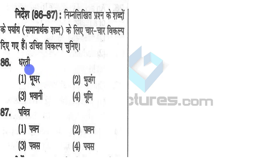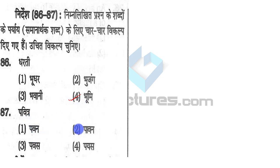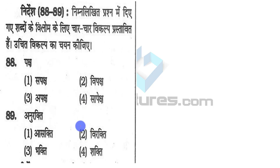Now they are asking for synonyms — you just have to tell the synonym of the given word. 'Dharti' means earth, and the synonym for dharti is 'bhoomi,' which also means earth. 'Pavitra' means pure, and 'pavan' also means pure. So the synonym for pavitra is going to be pavan.